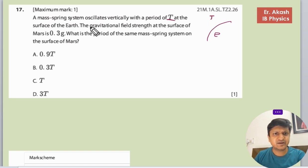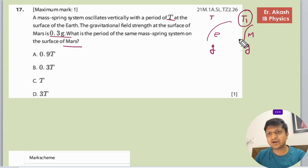The gravitational field strength at the surface of Mars is 0.3g. At Mars there is 0.3g and on Earth it is g. What is the time period of the same mass-spring on the surface of Mars? So this T1 we have to find out at Mars.